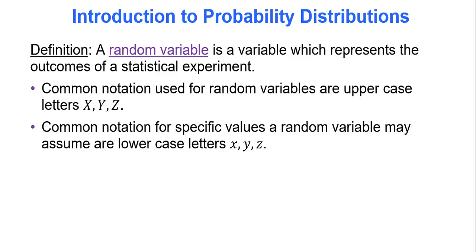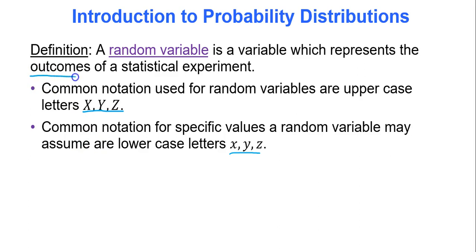A random variable is a variable which represents the outcomes of a statistical experiment. We represent random variables with capital letters like X, Y, and Z, and then specific values these random variables can equal are represented with lowercase letters. So let X be a random variable representing the number of heads you get when you flip a coin 5 times.